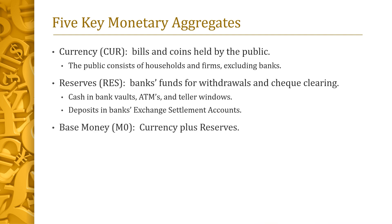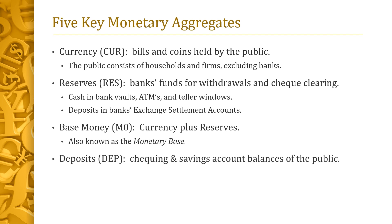The third aggregate is base money, abbreviated M0. It is defined as the sum of currency CUR and reserves RES. Base money is also known as the monetary base. The fourth aggregate is deposits, abbreviated DEP — the checking and savings account balances of the public. Finally, the money supply M, or simply money, consists of currency CUR plus deposits DEP.